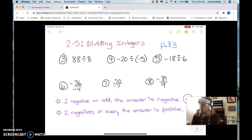So let's go to some examples. Number 3: 88 divided by 8. What's the answer going to be, positive or negative? Positive, because there's no negatives at all. And 88 divided by 8 is 11. Yes, 11. So the answer is just 11.